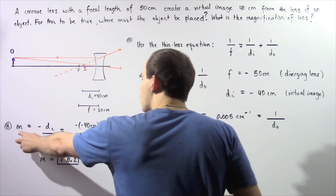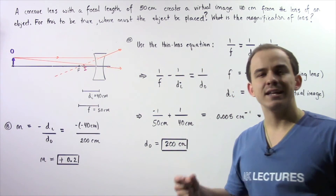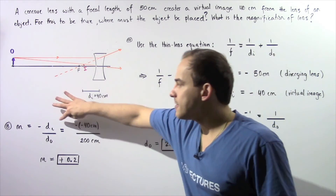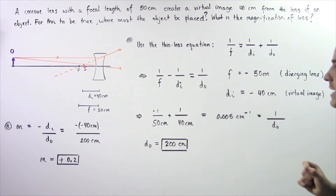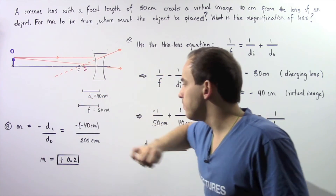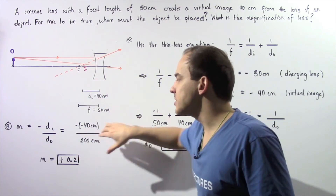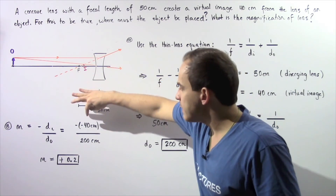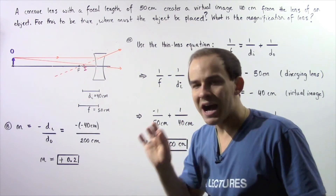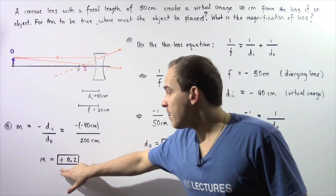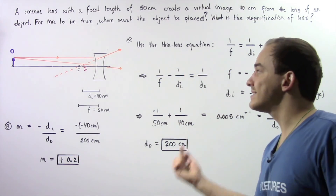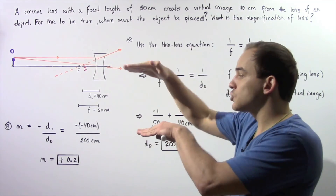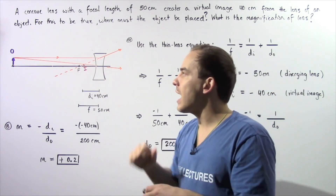Now let's move on to part B. The magnification is equal to negative of the image distance divided by the object distance. The image distance is negative 40 centimeters, so negative times negative becomes positive 40 centimeters, divided by the object distance of 200 centimeters from part A. So we have 40 divided by 200, which gives us positive 0.2. The fact that it's positive simply means the image is upright, and the fact that it's less than 1 means our image is actually smaller in size compared to our object.